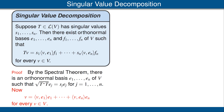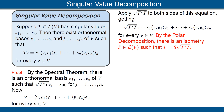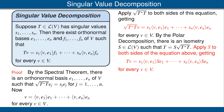Every vector v can be expressed as a linear combination of e1 up to en, and because e1 up to en is an orthonormal basis, we have the formula displayed. Applying the square root of T*T to both sides and using linearity gives the equation in the right column. By the polar decomposition, there exists an isometry S on V such that T equals S times the square root of T*T. Applying S to both sides of the equation gives the following equation.